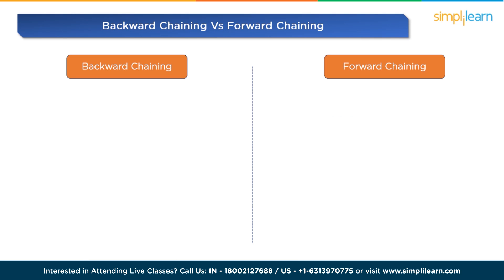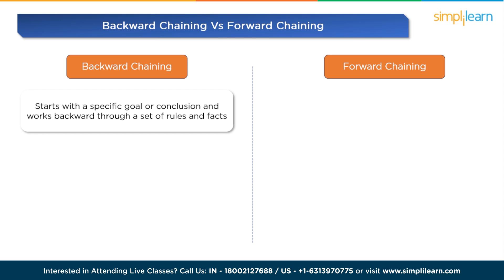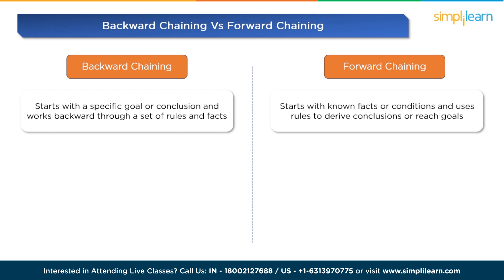Now let's see the major differences between backward chaining and forward chaining. They are two distinct inference techniques used in artificial intelligence and expert systems for problem solving and reasoning, differing in their approaches and how they derive conclusions from available information. Backward chaining starts with a specific goal or conclusion and works backward through a set of rules and facts to find evidence or conditions that support the goal. Forward chaining starts with known facts or conditions and uses rules to derive conclusions or reach goals, iteratively applying rules to known facts to generate new information.